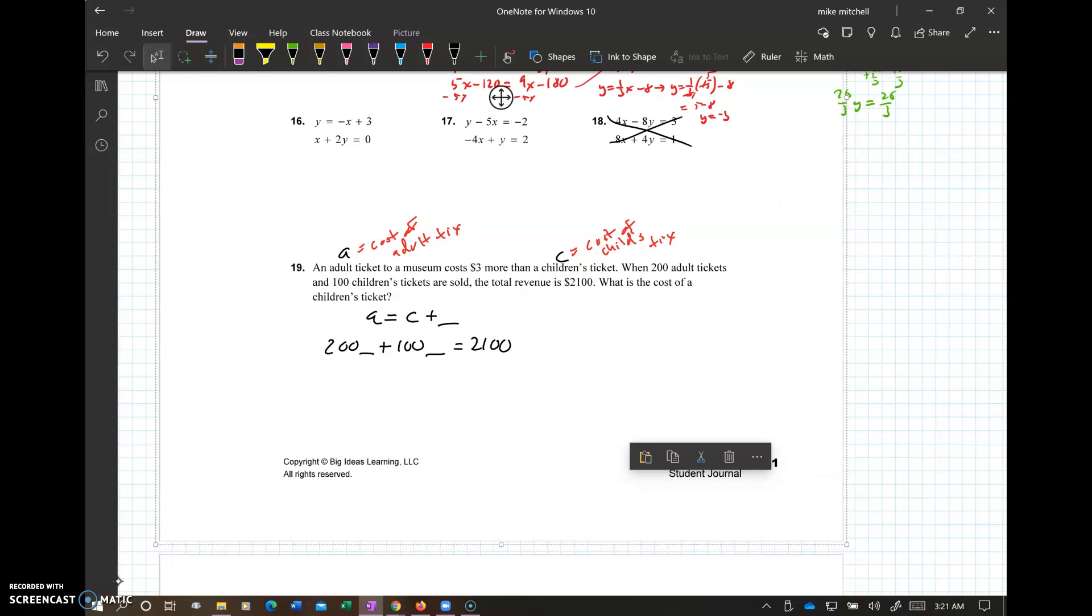Down here, number 19. A equals the cost of an adult ticket. C equals the cost of a child's ticket. An adult ticket to the museum costs three more than the children's ticket. When 200 adult tickets and 100 children's tickets are sold, the revenue is $2,100. What is the cost of a children's ticket? Okay, so look right here. An adult's ticket to the museum costs three more bucks than the children's ticket. Write an equation to represent that. A, the adult's ticket equals C, the children's tickets plus what? Yep, you got that, plus three.